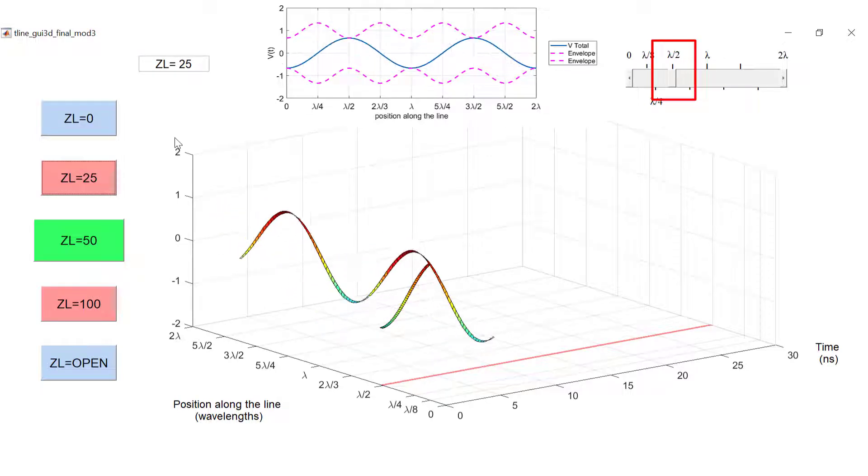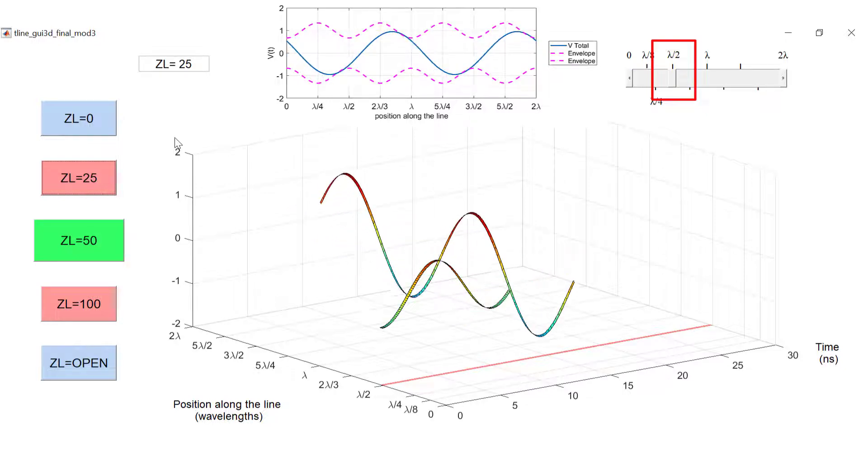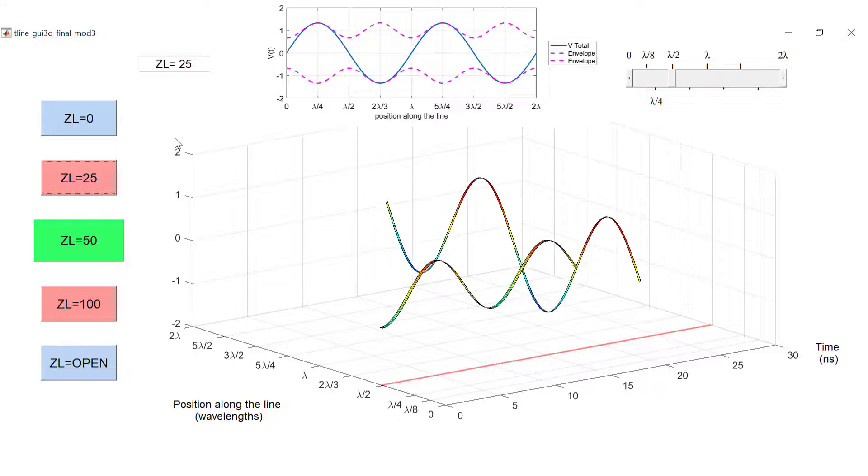If we now move our probe another quarter of a wavelength down the line, taking us half a wavelength away from our zero coordinate, we will again measure a sinusoid with the same amplitude as that observed at the zero point.